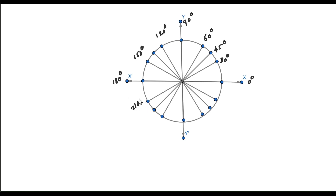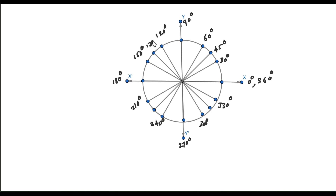Continuing: adding 30 gives 210 degrees, then 240 degrees, then 270 degrees, then 300 degrees, then 330 degrees, and finally 360 degrees — the same as 0 degrees. For the 45-degree position, we added 15 to 30. Similarly, adding 15 to 120 gives 135 degrees, adding 15 to 210 gives 225 degrees, and adding 15 to 300 gives 315 degrees.